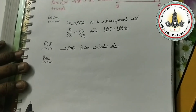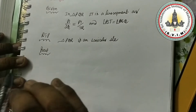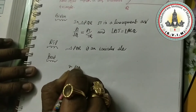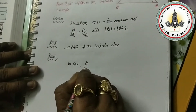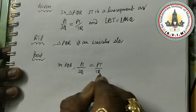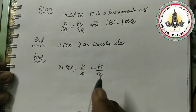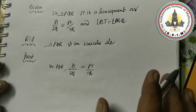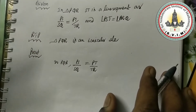Coming to the proof part. In triangle PQR, PS by SQ is equal to PT by TR. The line segment which is dividing two sides of a triangle in this way — that line segment is parallel to the third side of that triangle — according to the Converse of Basic Proportionality Theorem.